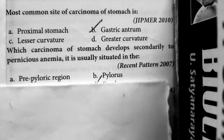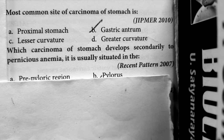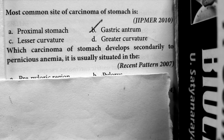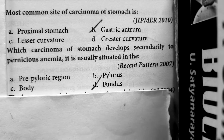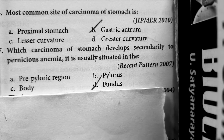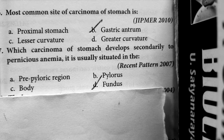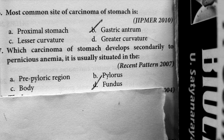Question 2: Which carcinoma of stomach develops secondary to pernicious anemia? It is usually situated in the fundus of the stomach. Normally the most common site of carcinoma stomach is the gastric antrum, but carcinoma of stomach secondary to pernicious anemia is situated in the fundus of the stomach.